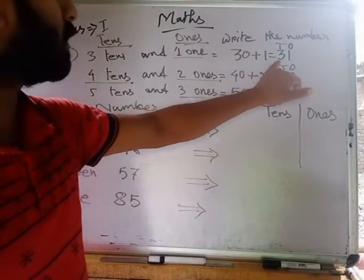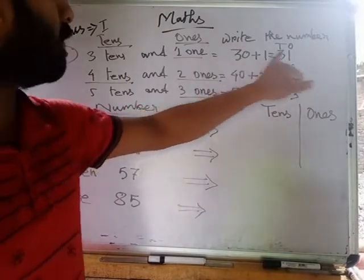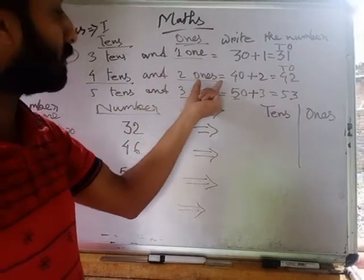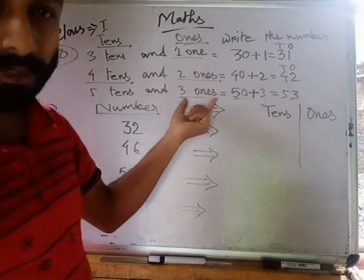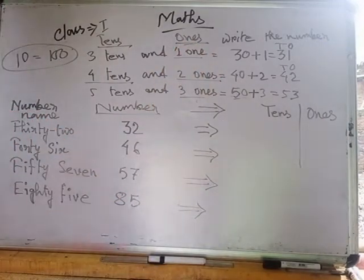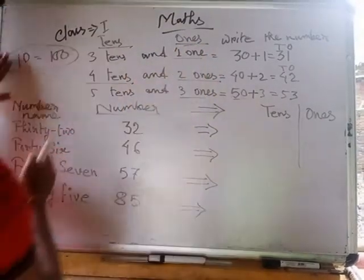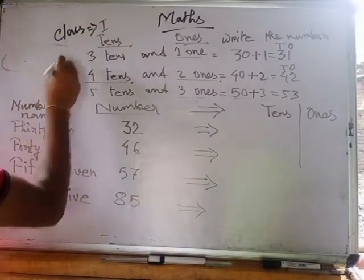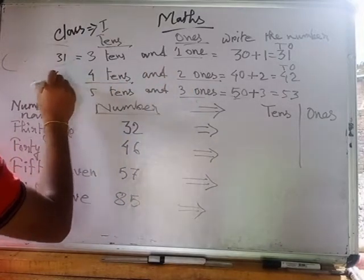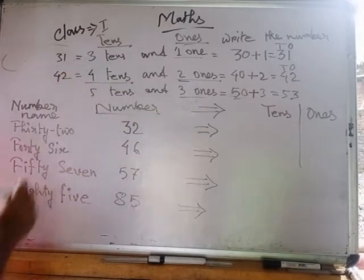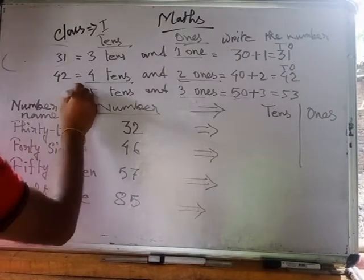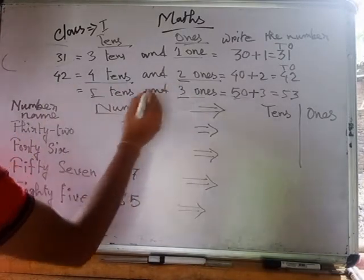Again, I will tell you the short form. If it is three tens, we write 3 at the place of tens, and 1 is at the place of ones. If there is more than one, that is called ones — three ones, two ones, four ones, five ones. Three tens and one one means 31. Four tens and two ones — four tens means 4 here and two ones means 2 — we write 2 just to the right of the 4.